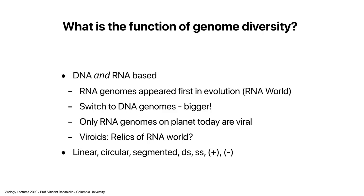DNA genomes were selected because they could get bigger. All the only genomes on the planet today that are RNA are viral. There are also virus-like entities called viroids — V-I-R-O-I-D-S — which are clearly relics of the RNA world because they encode no protein. These are naked circles of RNA that infect plants, spread from plant to plant, cause agricultural damage, and encode no protein whatsoever. They're really, really interesting.